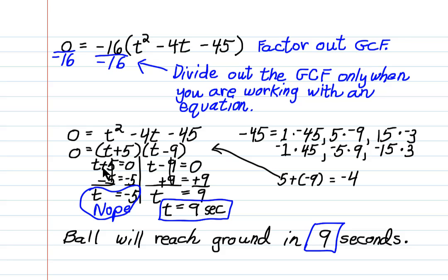Now I set each factor equal to 0. I solve each little equation. And I come up with solutions t equals negative 5 and t equals positive 9. But I'm looking for time in this problem. I need seconds. What exactly are negative 5 seconds? Well, again, if you take physics, you'll find out there is a purpose for negative time. But we're not going to deal with it now. So, we're going to go with the positive 9 seconds, which makes perfect sense. And that's our answer. The ball will reach the ground in 9 seconds. Talk to you later. Bye-bye.